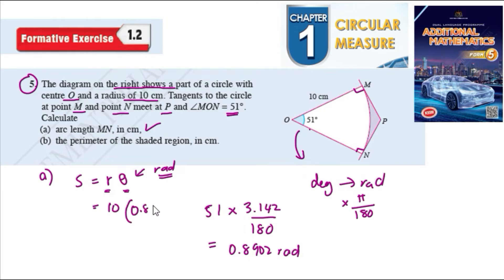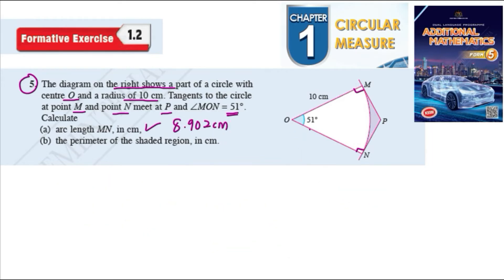So here we have 8.902 as the arc length in cm. So 8.902 cm, this is 8.902 cm. So part b, the perimeter of the shaded region. So we see here the perimeter of the shaded region is arc MN plus...